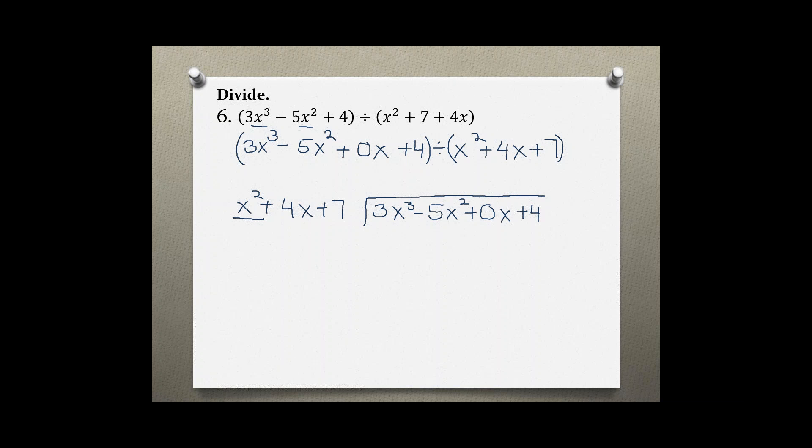Now, by what do we have to multiply x squared to get 3x cubed? We have to multiply by 3x, because 3x times x squared gives us 3x cubed. And then continue to distribute: 3x times 4x gives us plus 12x squared, and 3x times 7, which is plus 21x.